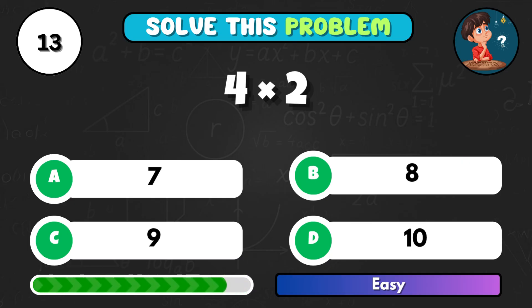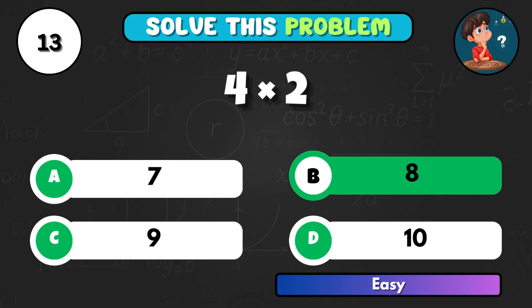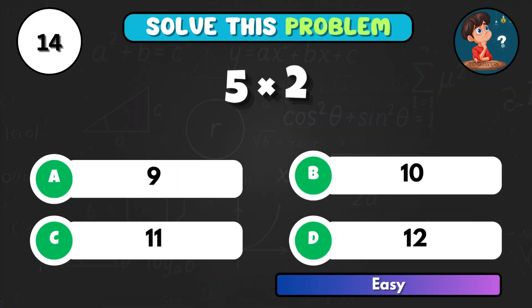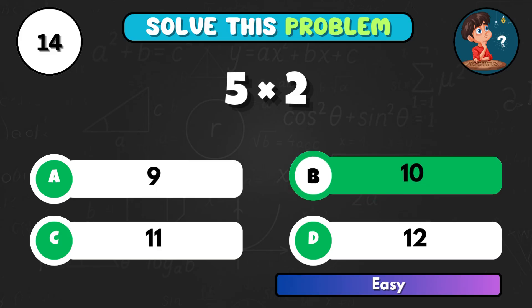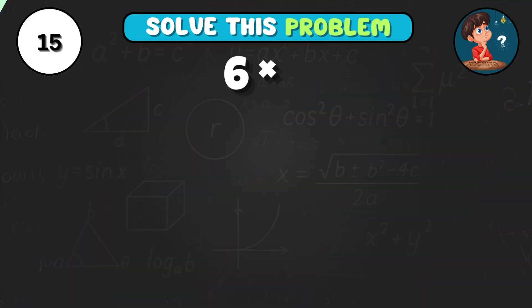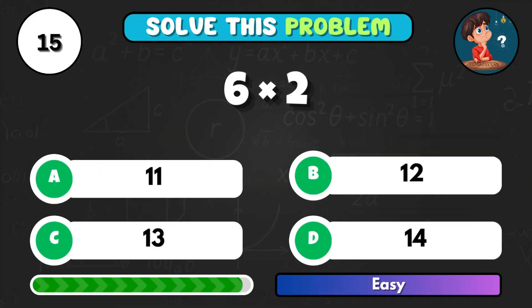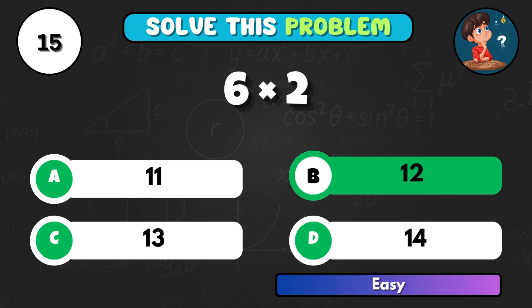4 times 2, what's the product? That's B, 8. 5 multiplied by 2. Correct answer B, 10. 6 times 2 gives you... Option B, 12.